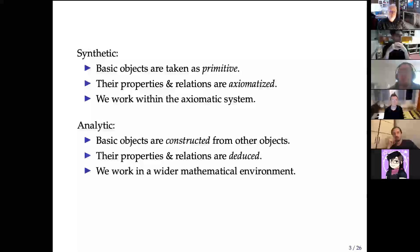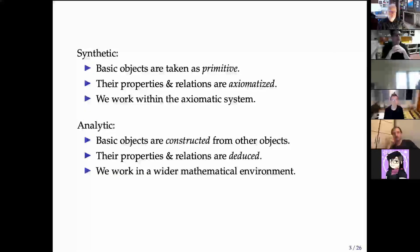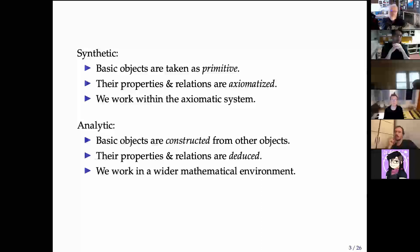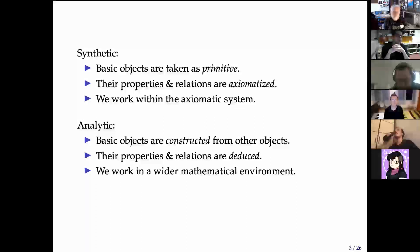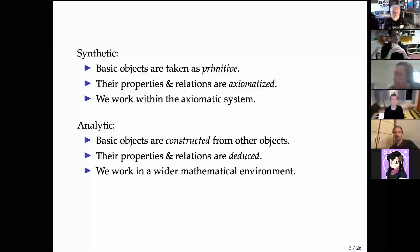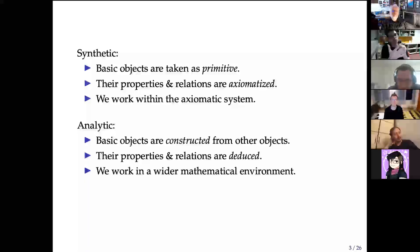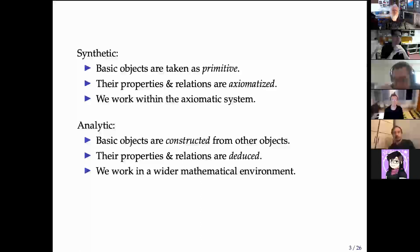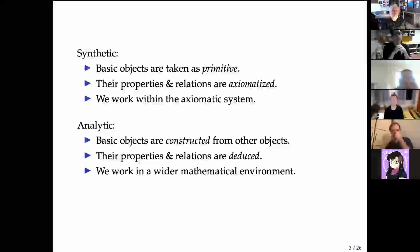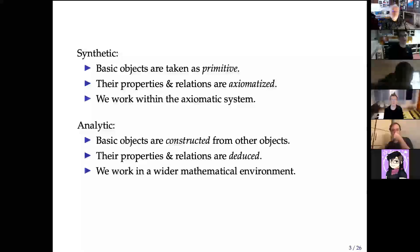In the synthetic approach, we have some basic objects of interest, like points and lines, which are taken to be primitive — that is to say, they are just primitive notions whose properties, relations, and structure are then axiomatized. In synthetic geometry of the plane, a line is not seen as a set of points, because there are no sets — there are just lines and points. There is a relation of a point being a member of a line, but that's not to be read in a set-theoretic way. All of geometry is done within the axiomatic system.